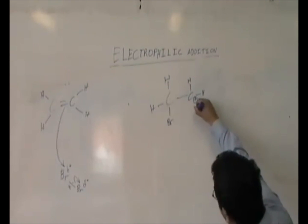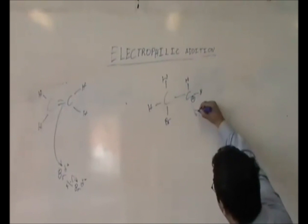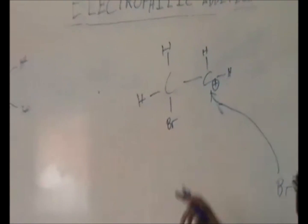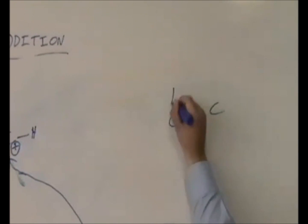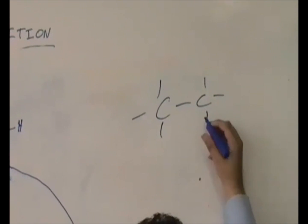So electrons move here to this carbon, which forms a new bond. It becomes dibromo ethane.